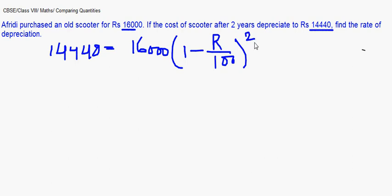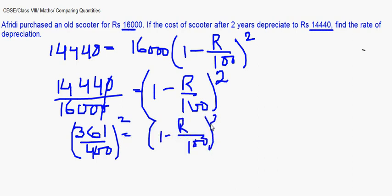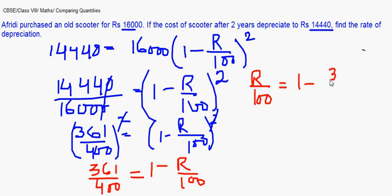You simply have to solve for the rate of depreciation. 14,440/16,000 = (1 - R/100)². This cancels to 361/400 = (1 - R/100)². Taking the square root, 19/20 = 1 - R/100. Solving this, R/100 = 1 - 19/20.